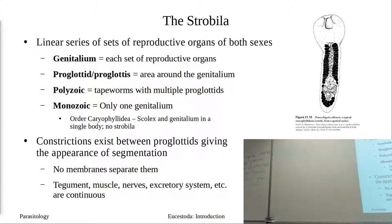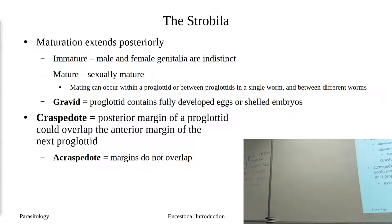There's no membrane separation — everything is contiguous until you get to the final terminal proglotids, where you do start seeing membranes form between them. That could be how eggs get released: you could have detachment of proglotids that travel down the gut and leave the host, or they rupture inside the intestine, leaving eggs to get passed in the feces.